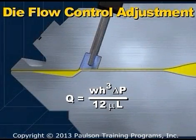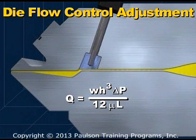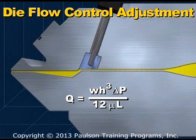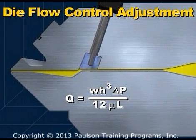Remember from our explanation of the Poiseuille fluid flow law that changing the height of the flow passage has an effect on flow to the third power. This effect will be the greatest when the height of the passage is smallest, as in dies producing thin sheet.